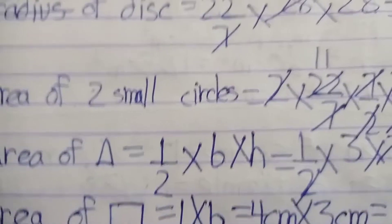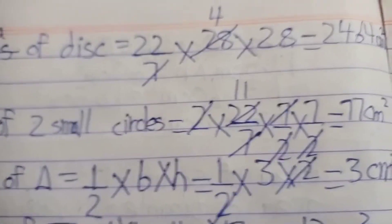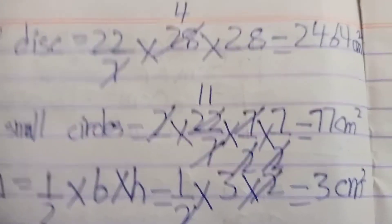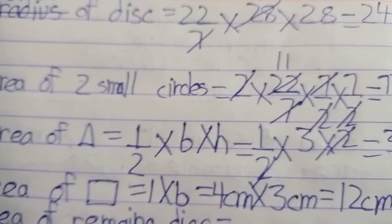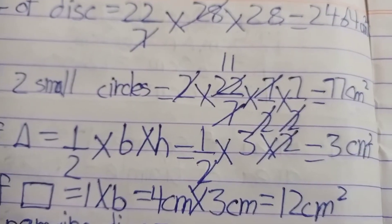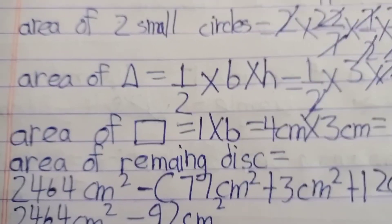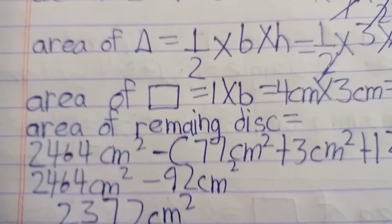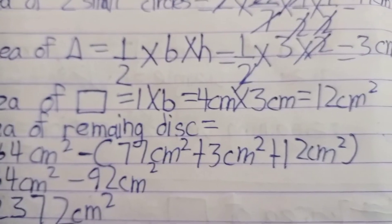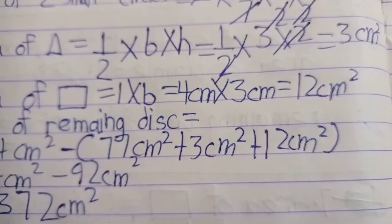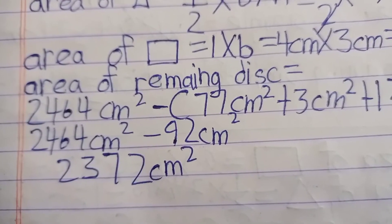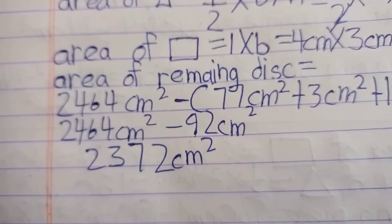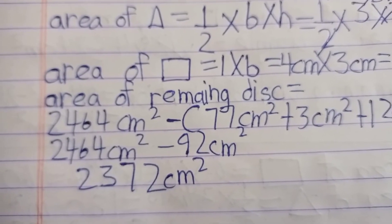Area of triangle equals 1 over 2 multiplied by base multiplied by height, so 1 over 2 multiplied by 3 multiplied by 2 which is 3 cm square. Area of rectangle is 4 cm multiplied by 3 cm which is 12 cm square. Area of remaining disc is 2464 cm square minus 77 cm square plus 3 cm square plus 12 cm square, which equals 2372 cm square.